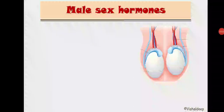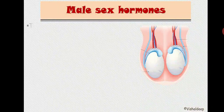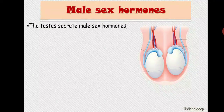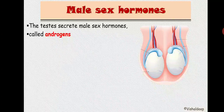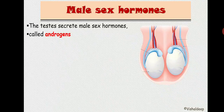This is the third lecture on the male reproductive system, covering male sex hormones. The testes secrete male sex hormones called androgens. By definition, androgen means any steroid hormone that has a masculinizing effect, including testosterone. Masculinizing means masculine in nature or appearance.